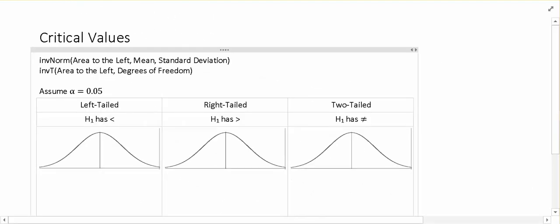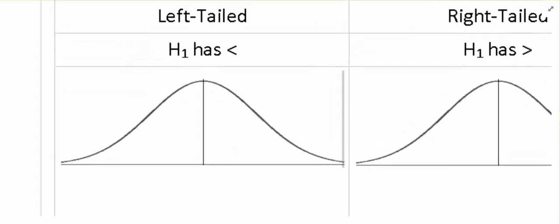So as I zoom back out, we have three different situations that are going to arise when we're doing hypothesis testing. We can either have a left-tailed test, which is when your alternative has less than in it. We can have a right-tailed test, which is when your alternative has greater than in it. Or we can have a two-tailed test, which is when your alternative has not equal. So let's go ahead and start with a left-tailed test.